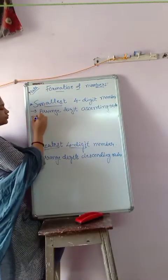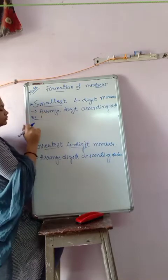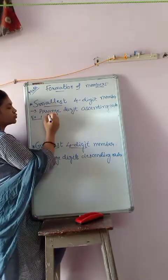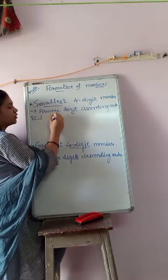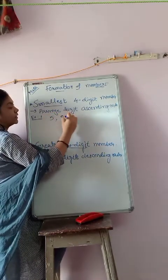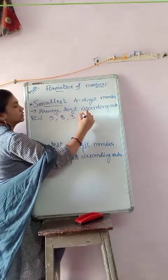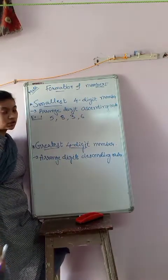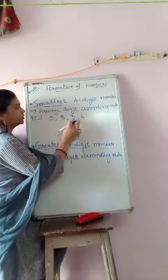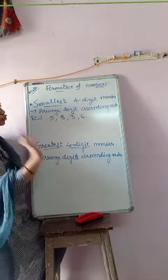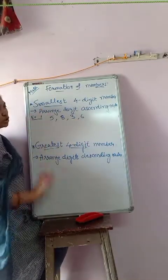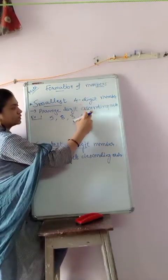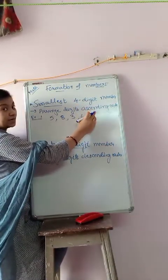Example 1. You are given 4 digits: 5, 8, 3, 6. What should you do? You have to make the smallest four-digit number. So you have to arrange the digits in ascending order, meaning smallest to largest.